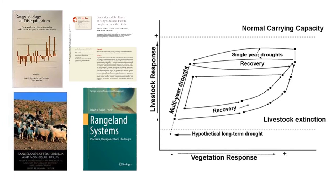The implications for range management are quite profound. Range management as an applied management science evolved particularly in the United States in very stable equilibrium rangelands, where Clemensian succession patterns of vegetation change in relation to livestock pressure were normal. Out of conventional rangeland management came all the classic textbooks — still used and still taught in Africa — produced in the 1960s and 70s.